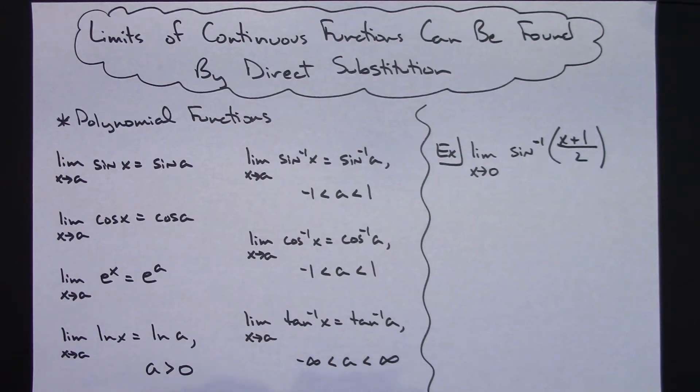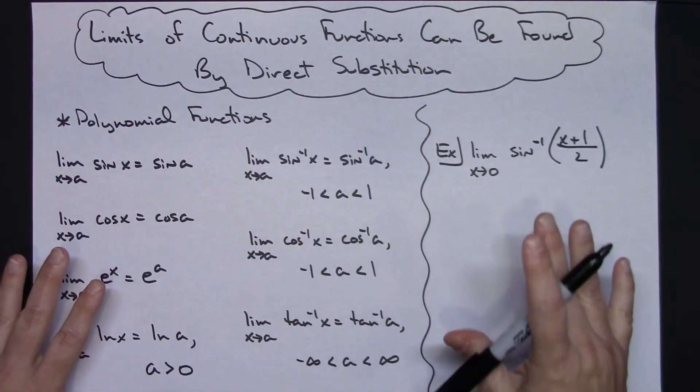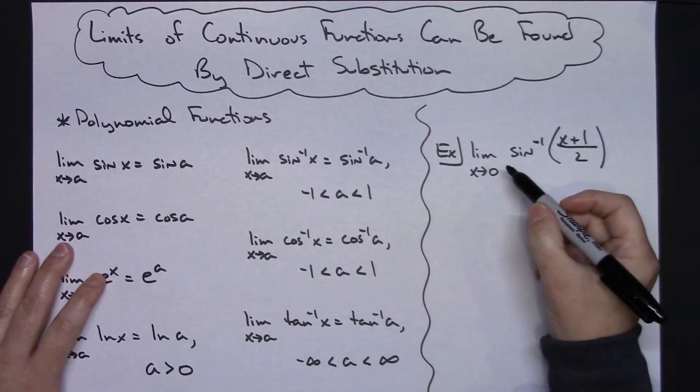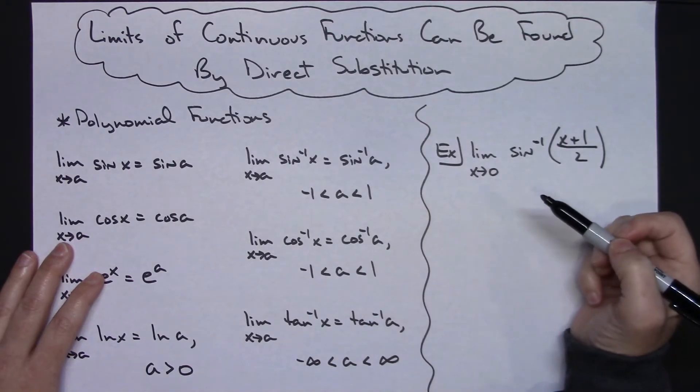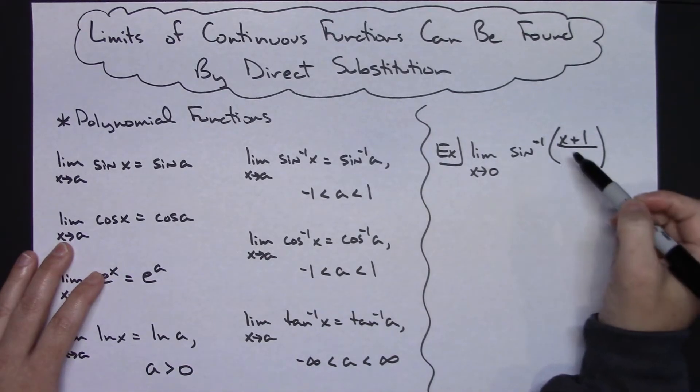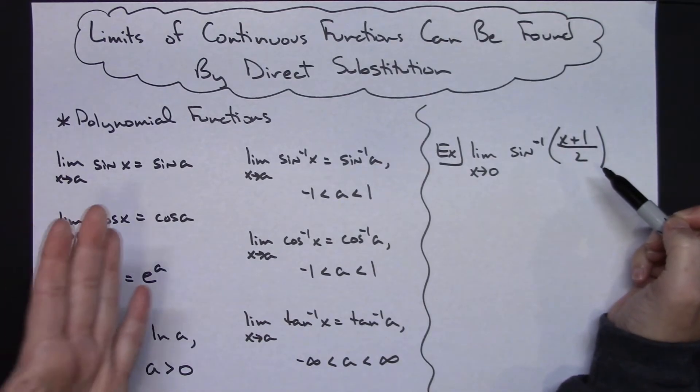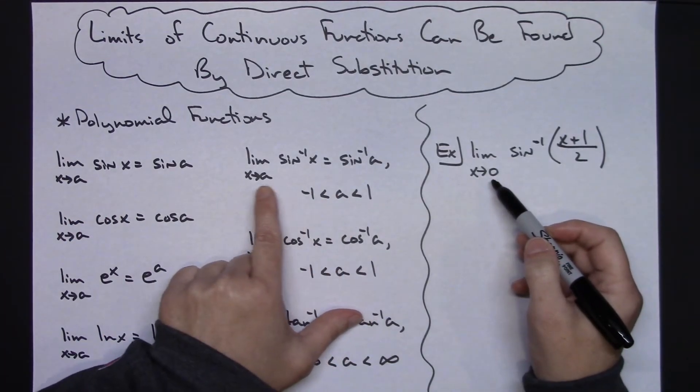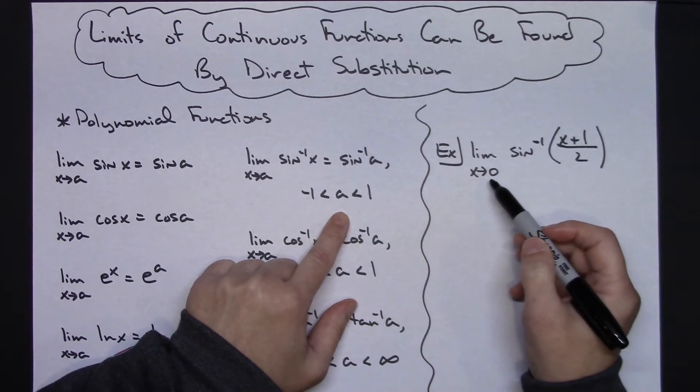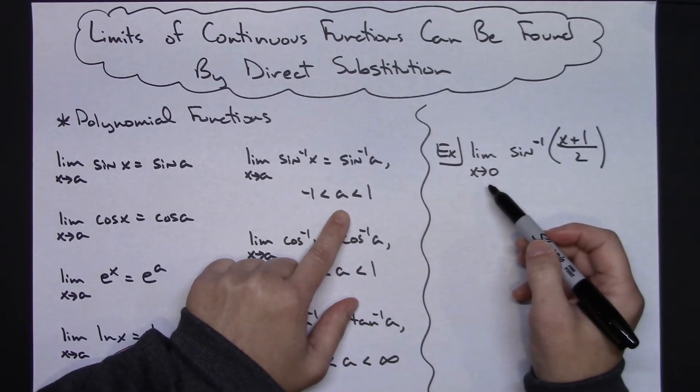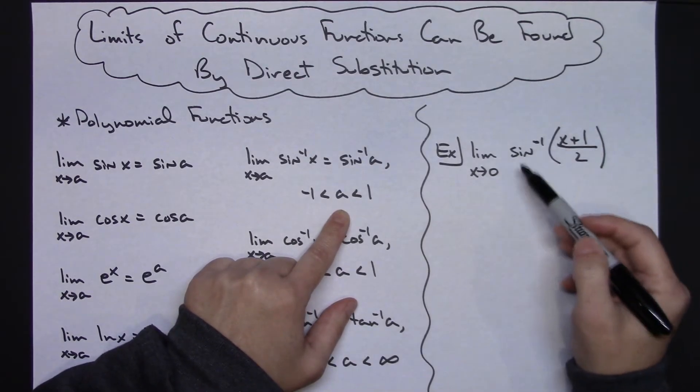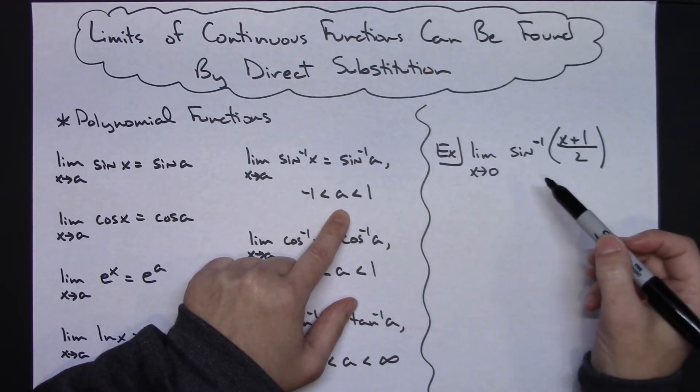Because direct substitution is relatively simple, I thought I would just do one example here. Let's suppose we're taking the limit as x approaches zero of the inverse sine of x plus one over two. First thing you're going to do is check to see if the constant of what you're approaching here falls within the given interval, and it does. So I am going to be able to use a direct substitution.